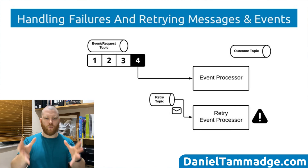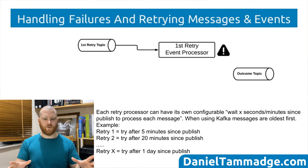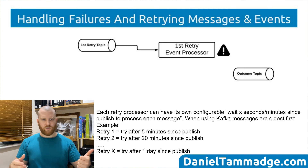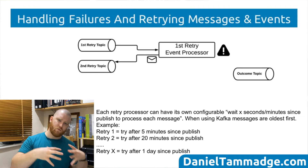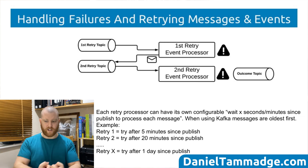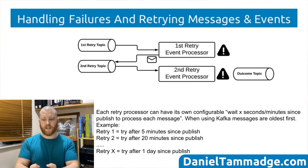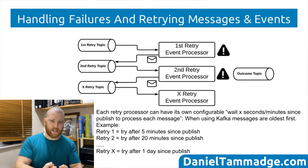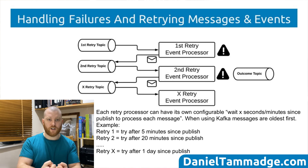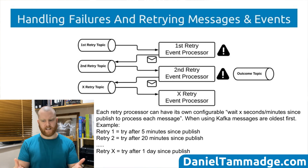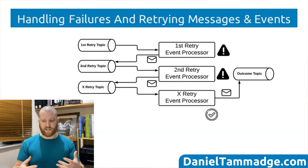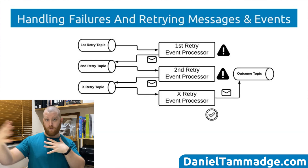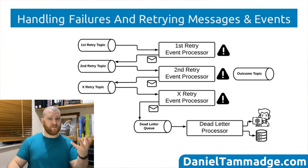Let's have a look at the full retry topic solution. The first retry event processor would fail, then publish another message to a second retry topic. A second retry event processor consumes that. If it also can't process, it publishes to yet another retry topic, and a third dedicated retry event processor consumes that topic. If successful, it again publishes to the outcome topic.